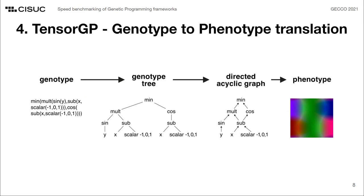From the scheme, we can observe that the process to execute an individual in our engine consists of three main steps. The first is transforming the expression representation from a string to a tree graph. TensorFlow then transforms our tree representation into a directed acyclic graph, which avoids the re-evaluation of pieces of identical individuals. Finally, we execute the tensor operations defined in the TensorFlow graph in order to generate our phenotype, which is a tensor. It is worth remembering that throughout this pipeline, we are working with tensors that contain the whole evaluation domain, rather than one single data point.